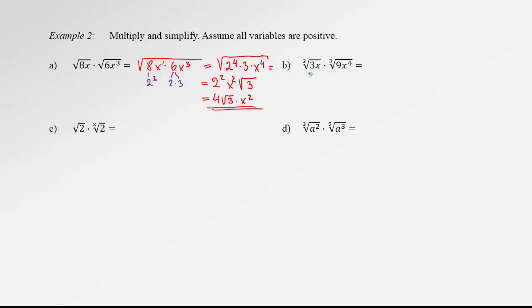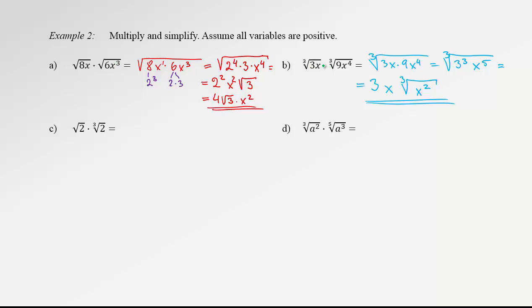For the cubic root of 3x times the cubic root of 9x to the 4: since the indexes are the same, we rewrite as a single cubic root of 3x times 9x to the 4. Combining powers of the same base: 3 times 9 is another 3 times 3, so we have 3 to the 3 and x to the 5. Now simplifying: 3 to the 3 divided by index 3 pulls one 3 out with no remainder. For x to the 5: 3 goes into 5 once, so x goes out with remainder 2, meaning x squared remains under the root. The final answer is 3x times the cubic root of x squared.